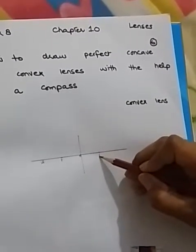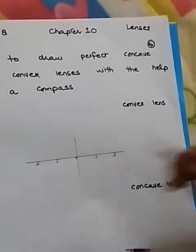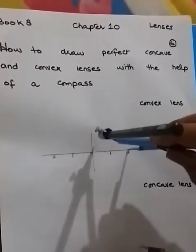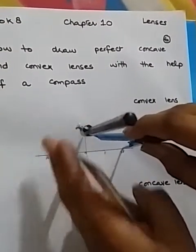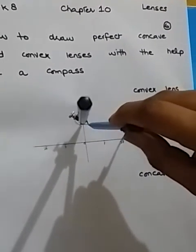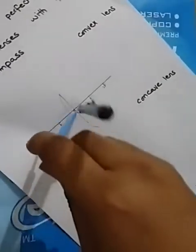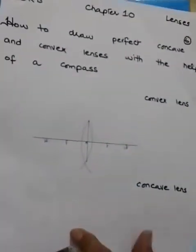Now at 2f I'm going to put my compass and adjust it so that I can get a perfect convex lens. I'm going to draw an arc on the left hand side. Now I will rub the extra lines.